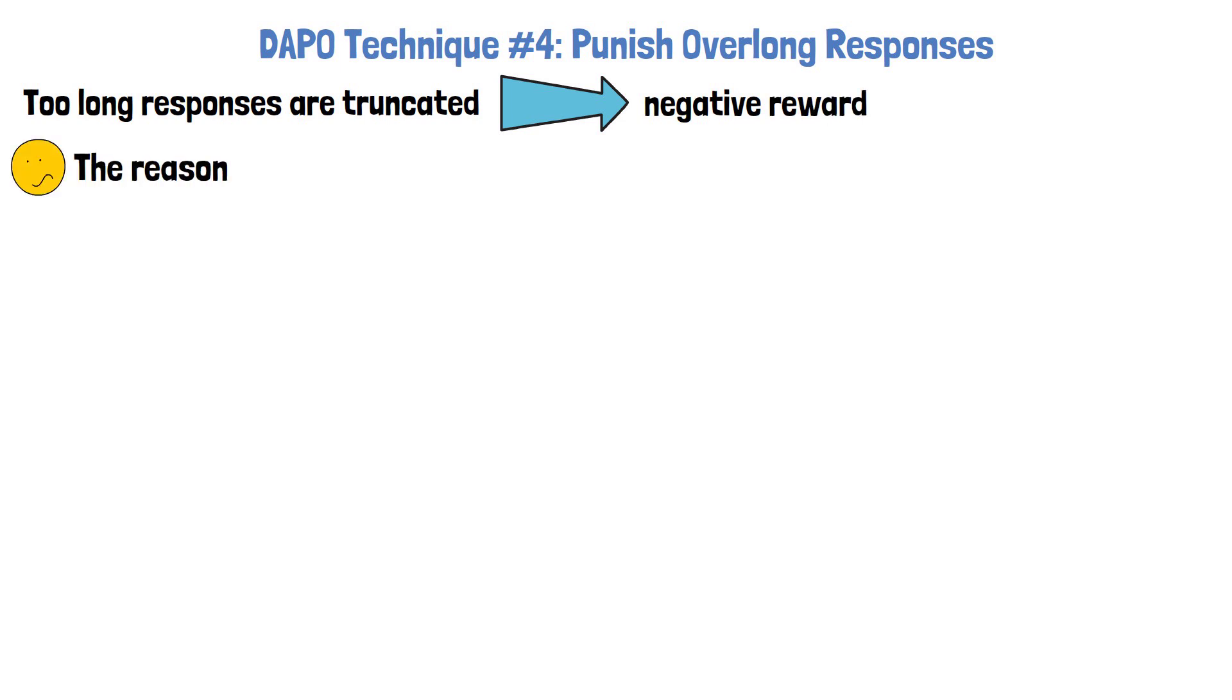However, the reasoning process up to the truncation point may still be valid. This can confuse the model since it is being punished for high quality reasoning.